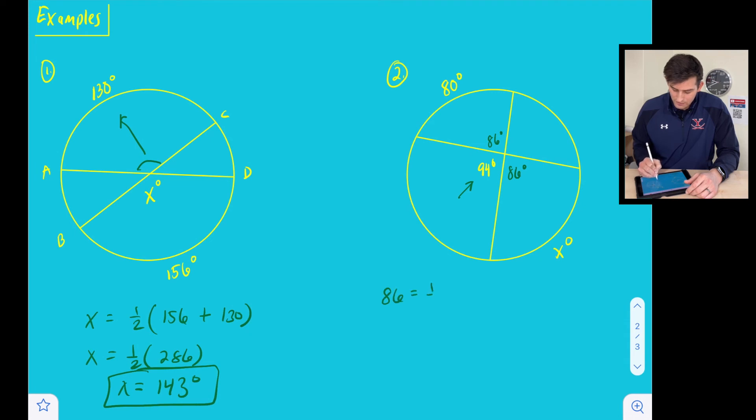We know that 86 is equal to one half the measure of its intercepted arc, which right now is X, plus the intercepted arc of its vertical angle, which would be 80 degrees.